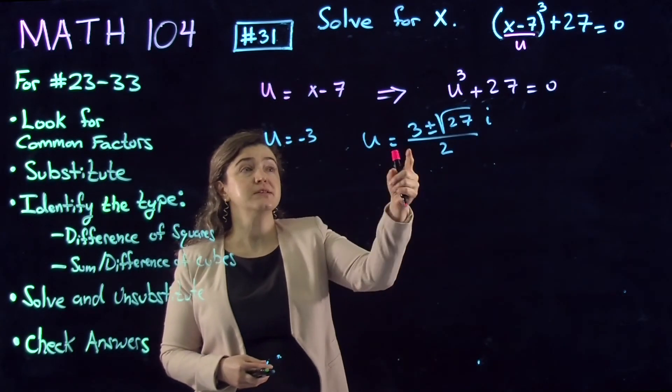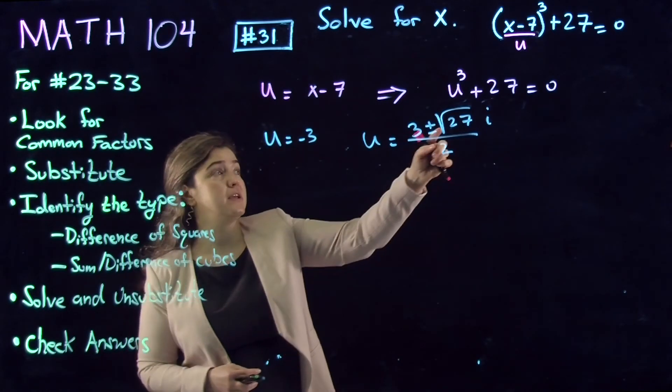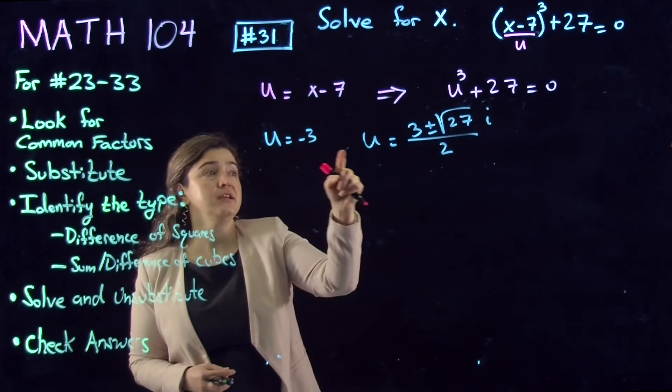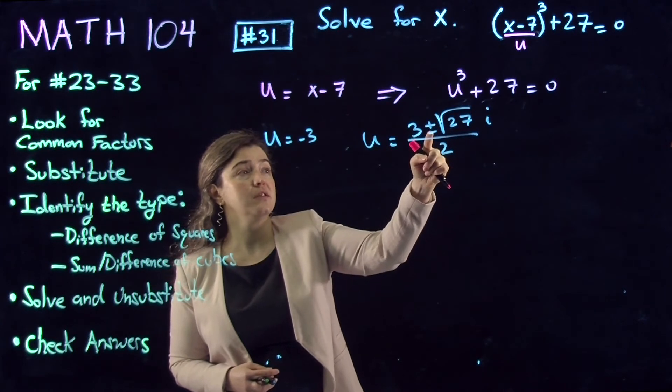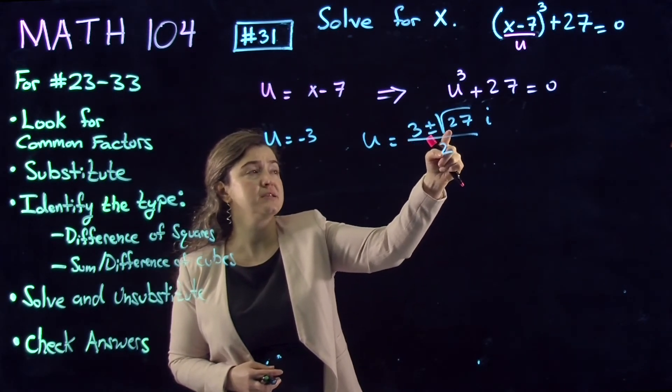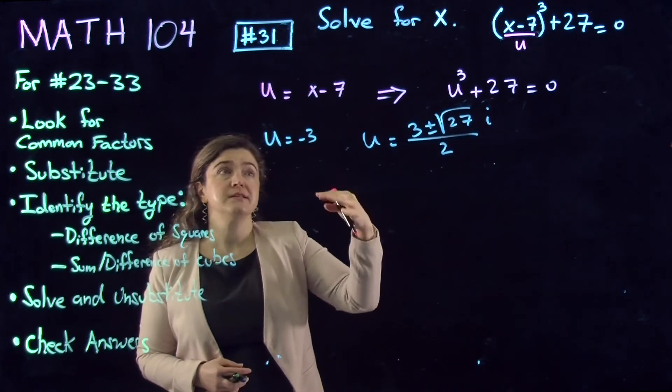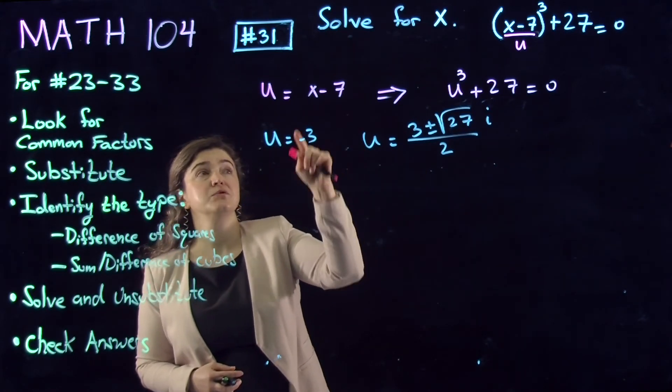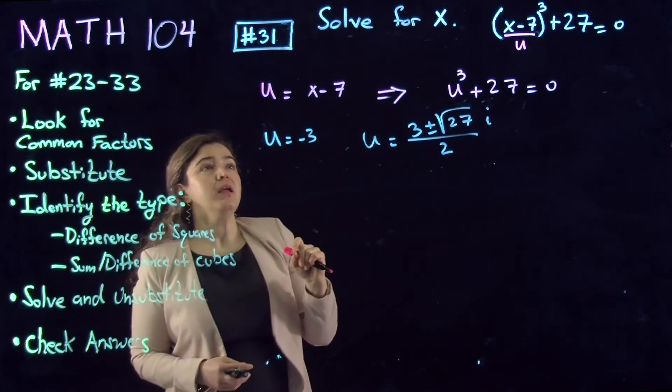The solutions that we found from factoring the expression with the u substitution are u = -3 and two other solutions: u = (3 ± √27i)/2. For each of these three solutions, we're going to find a solution for x because we're solving for x and not for u.